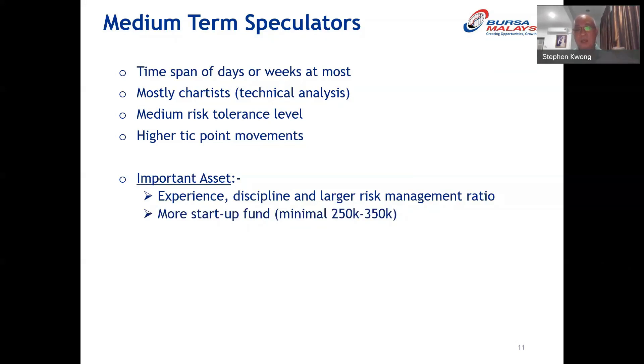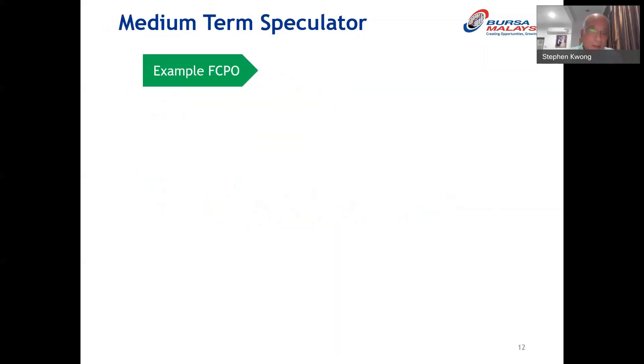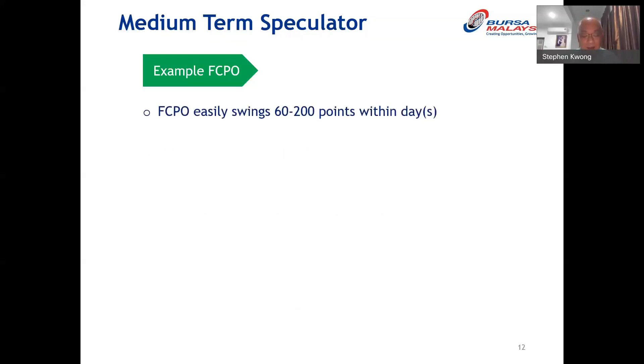Why so much more? Because you will need to hold a larger position for a longer time. If you've been observing FCPO on Bursa Malaysia, within days FCPO swings between 60 to 200 points easily over two or three days. From a scalper's perspective they look at minutes — within minutes you can see 10 to 20 points. For a medium-term speculator, the timeframe is two to three days. You can put in 10 to 30 contracts quite easily given the liquidity — the 6,000 ringgit initial margin requirement still applies, meaning any 240-point movement against you can wipe out your initial margin.